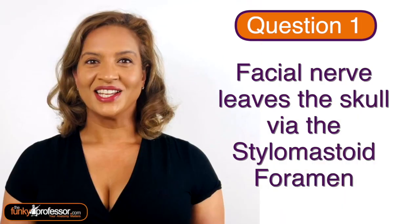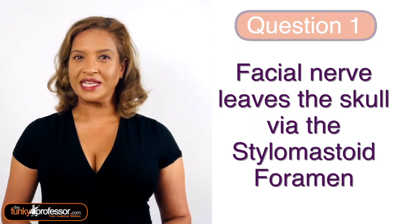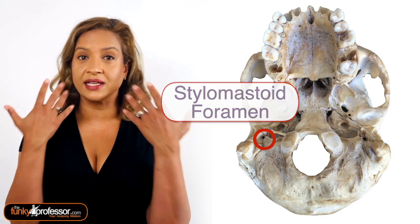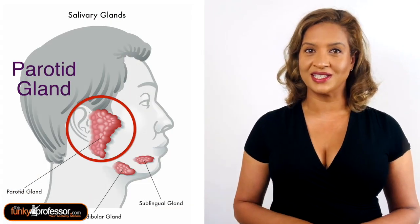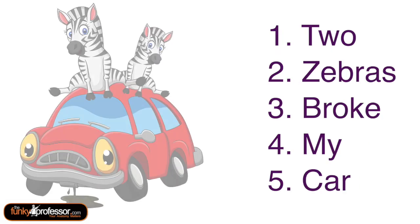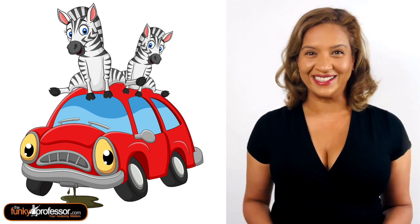The answers! Question number 1: The facial nerve leaves the skull via the stylomastoid foramen and enters into the parotid gland where it divides into 5 terminal branches. These are the temporal, zygomatic, buccal, mandibular, and cervical. My mnemonic for this is 'Two zebras broke my car.' I love that imagery of 2 zebras sitting in my car.